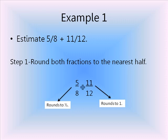The first thing we're going to do is round each individual fraction to the nearest half. Using previous strategies, 5 eighths is pretty close to 1 half, and 11 twelfths is about as close to 1 as you can get. So we round both those fractions.